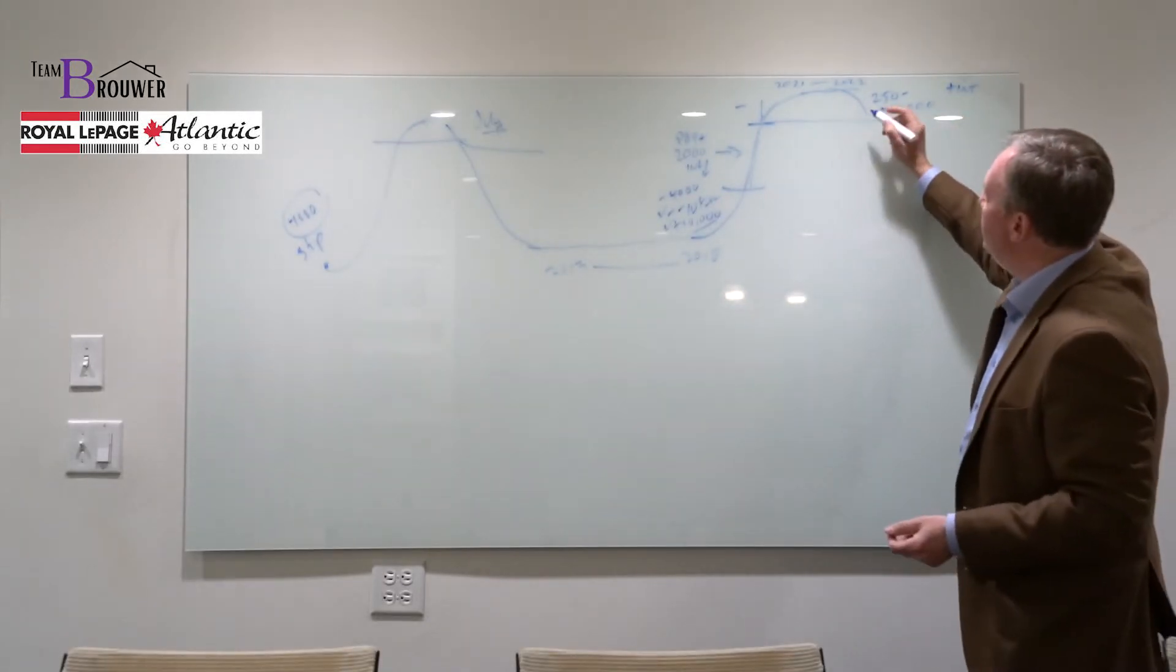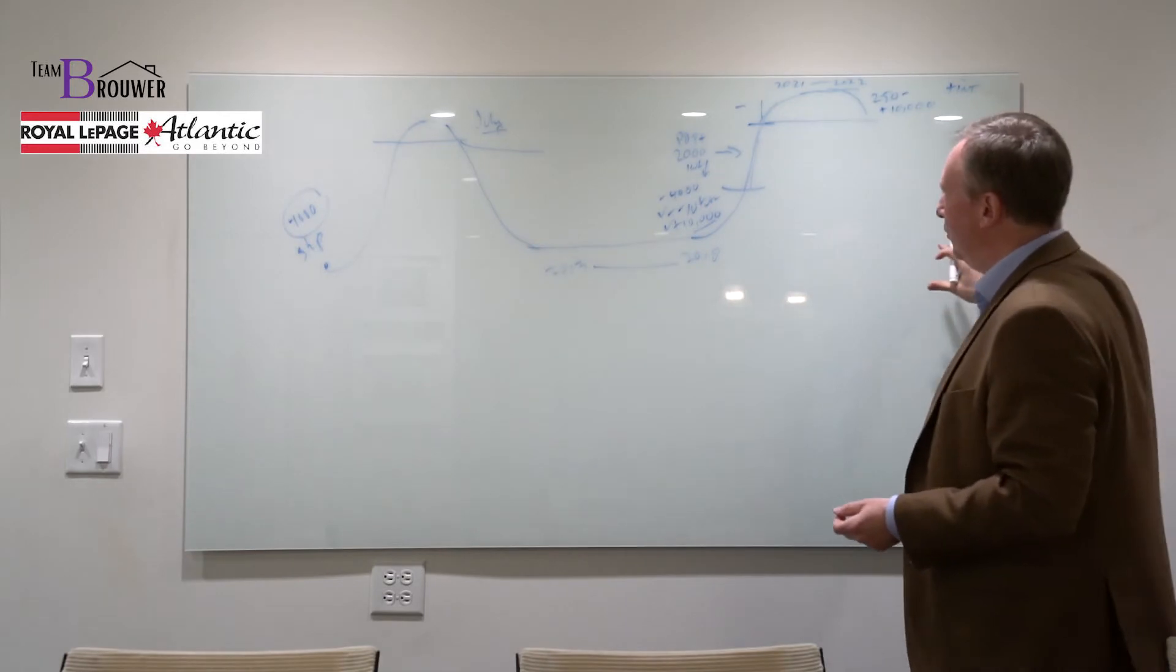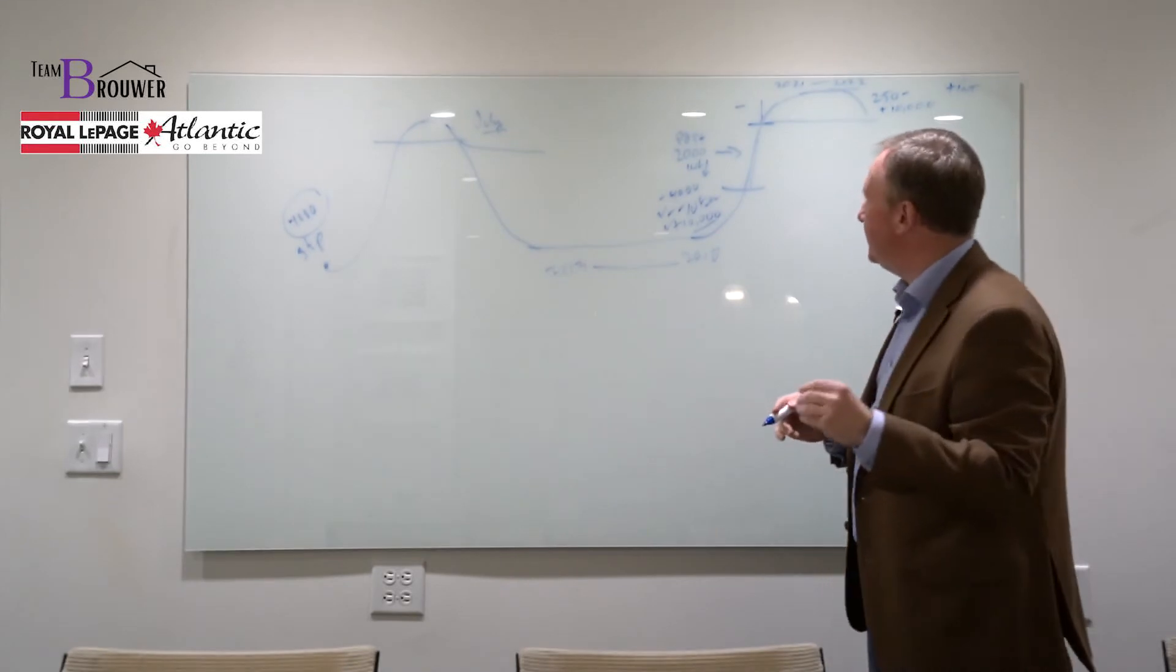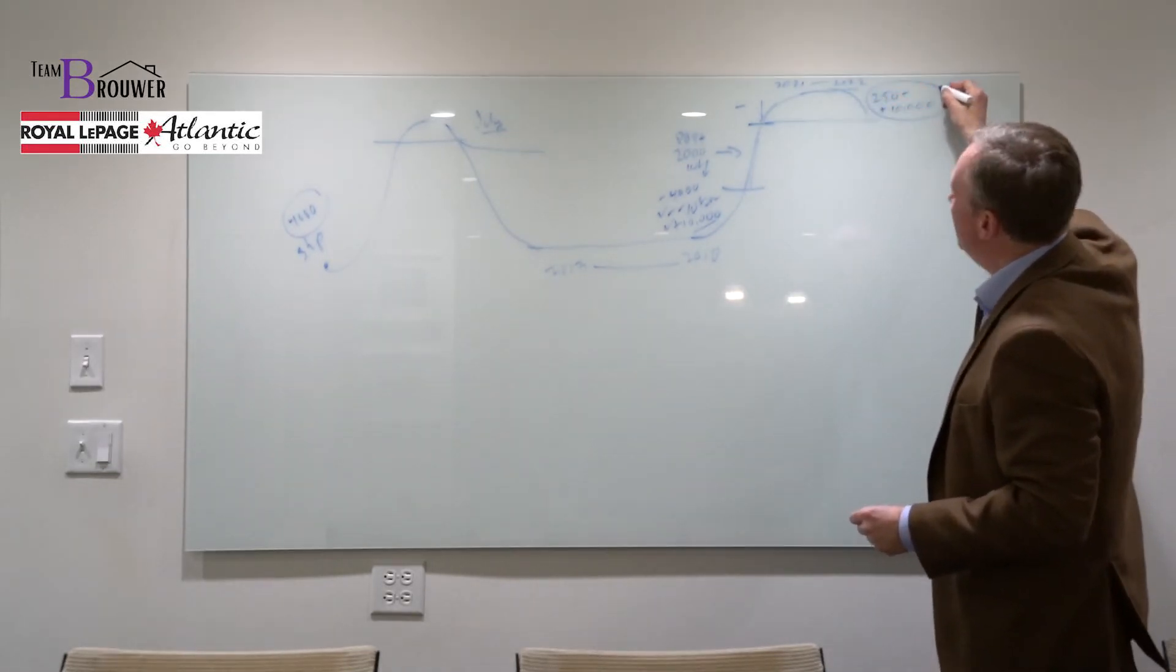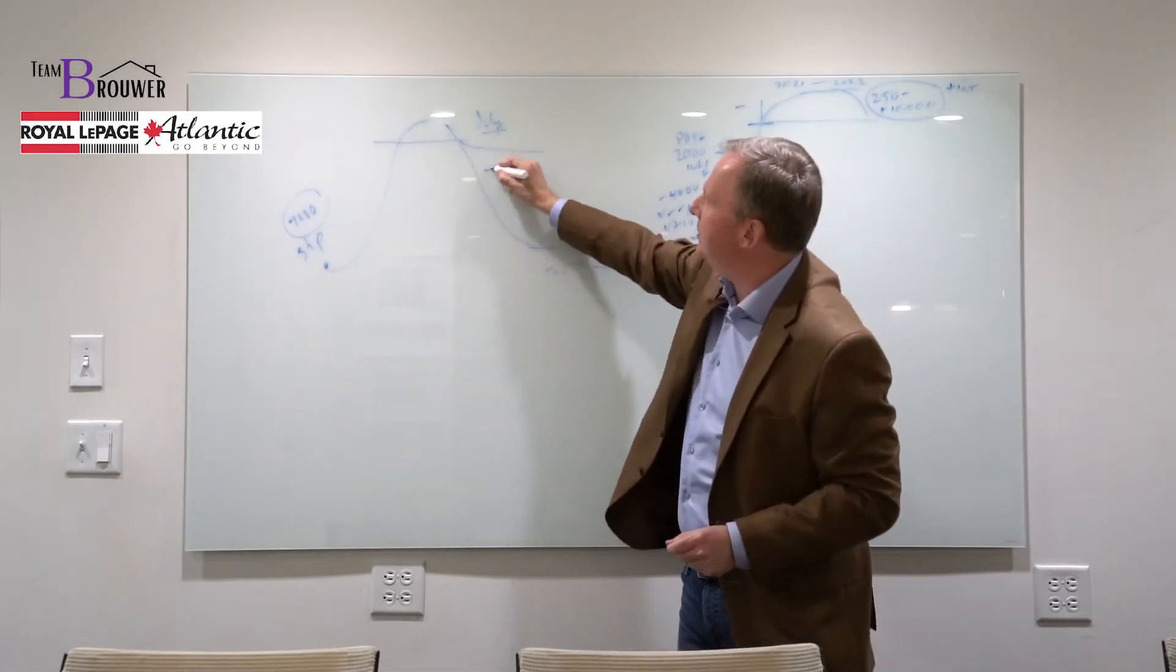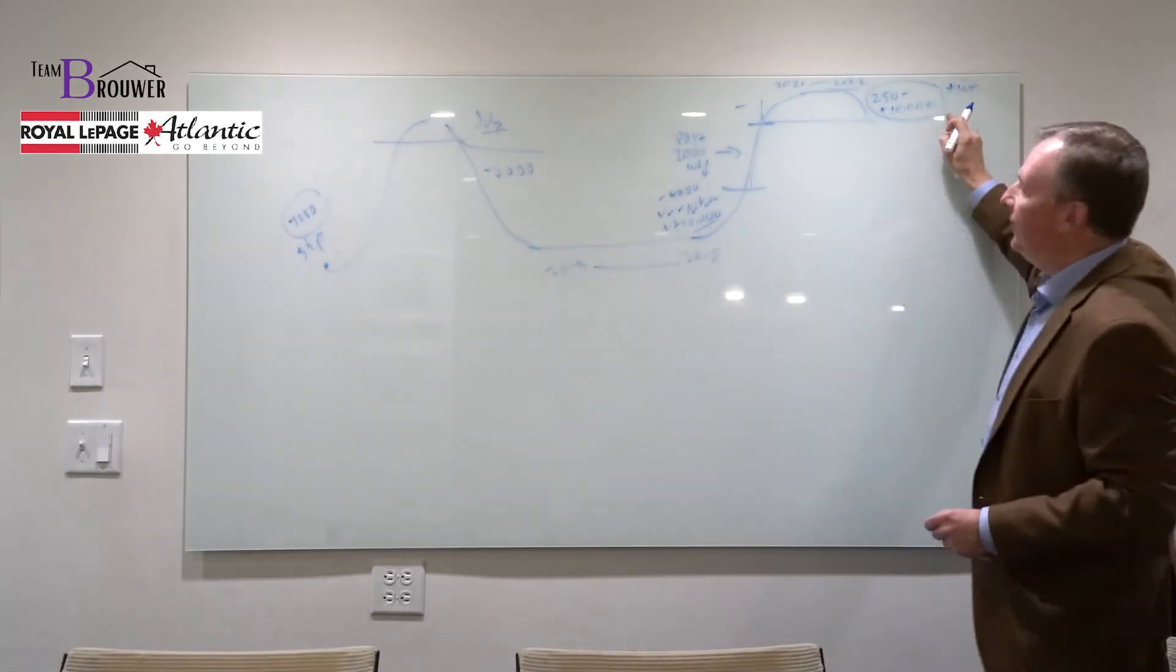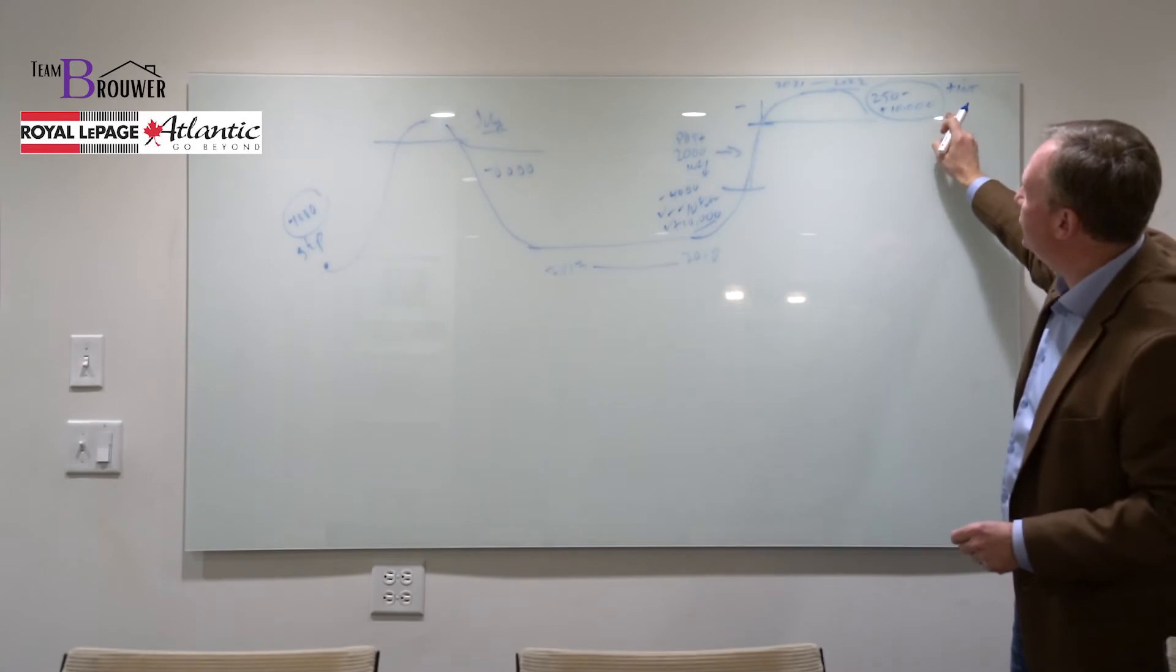What does that mean? Well, that means that now we start seeing pressure downwards because with higher interest rates your borrowing power decreases. Now we still have these conditions here and those are what's different from 2012 because in 2012 we actually had 6,000 people a year moving away. Now we have 10,000 people a year still moving here to Nova Scotia.